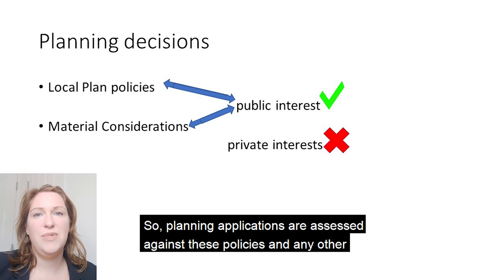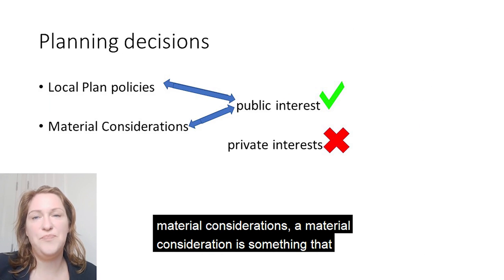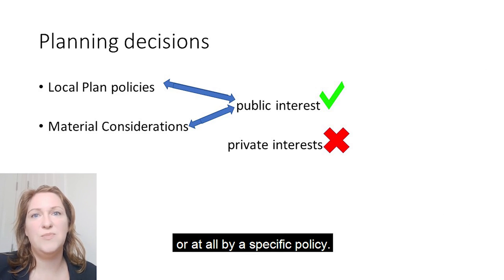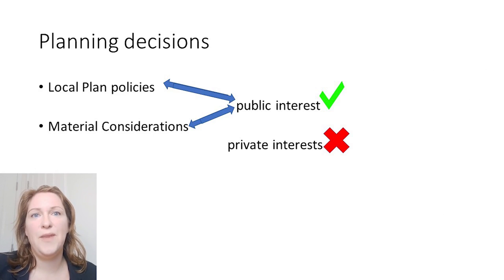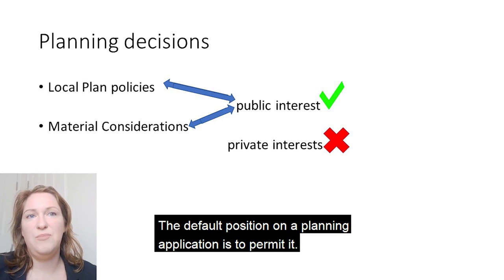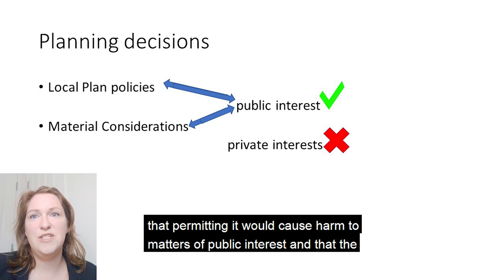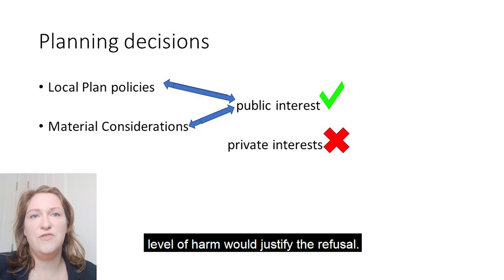Planning applications are assessed against these policies and any other material considerations. A material consideration is something that affects a matter of public interest but may not be covered adequately or at all by a specific policy. The default position on a planning application is to permit it. An application can only be refused if the planning authority can demonstrate that permitting it would cause harm to matters of public interest and that the level of harm would justify the refusal.